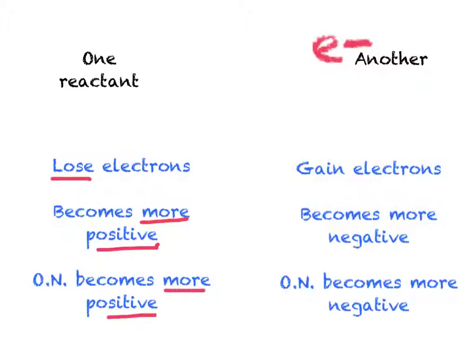Similarly, our other reactant, which has gained the electrons, hence becomes more negative, and the oxidation number therefore becomes more negative.